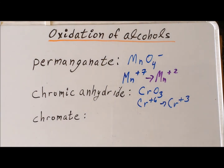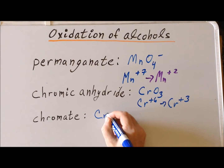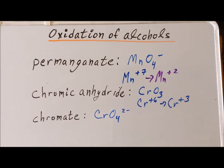Another way to introduce this chromium plus 6 oxidation state, sometimes called hexavalent chromium — because hex is the Greek prefix meaning 6 — is through the chromate ion. Chromate ion has the formula CrO4 with a minus 2 charge. Chromate has the structure as shown in the following diagram.